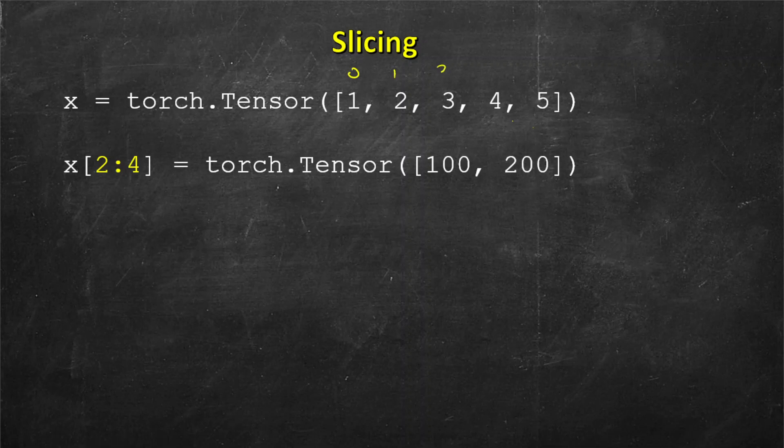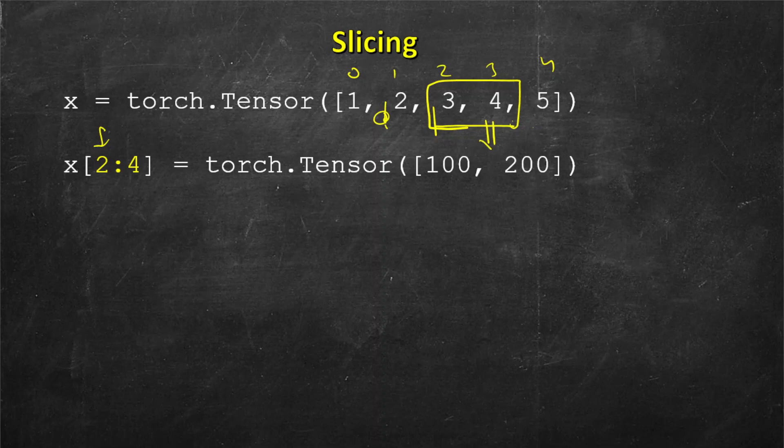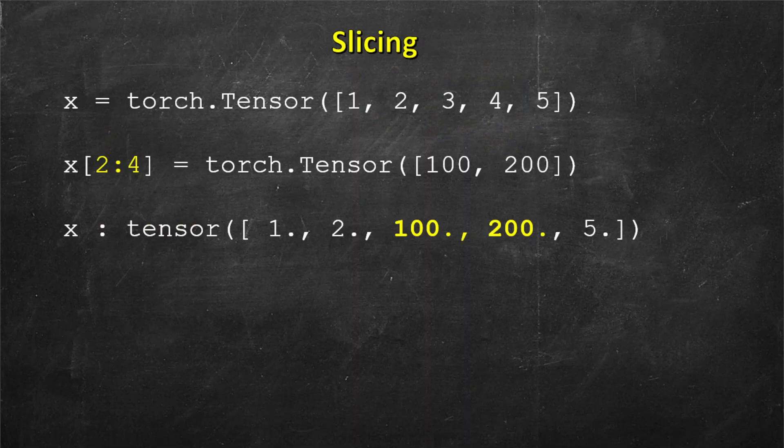Again this is 0, 1, 2, 3, 4. First index is 2 and last index is 4. Index 2 starts here and before 4 not including 4, so just 3 and 4. So it should be replaced with 100 and 200, and you can verify it by printing. Now the x tensor is 1, 2, 100 and 200 and no longer 3 and 4.